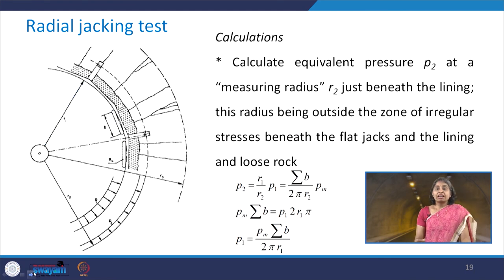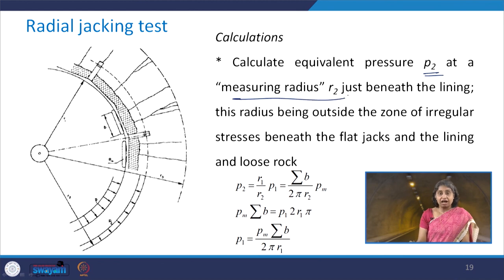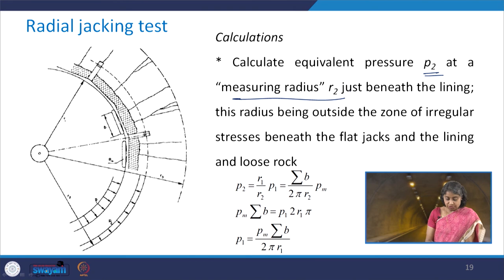We then calculate the equivalent pressure p2 at measuring radius r2, which is just beneath the lining. This radius is beyond the zone of irregular stresses beneath the flat jacks, the lining, and loose rock.